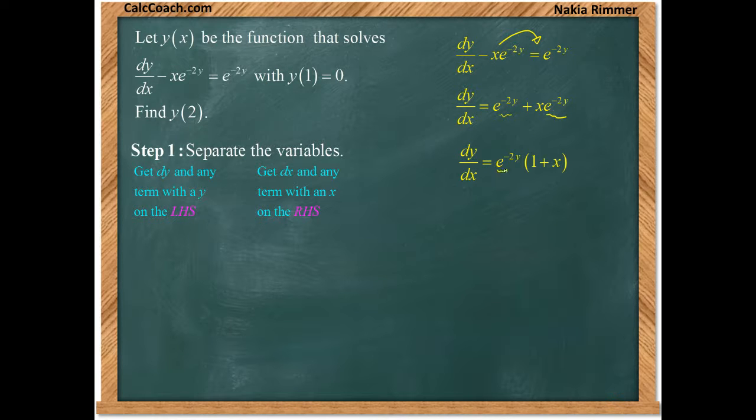And with this e to the negative 2y we could write it on the denominator as e to the 2y. So now we have things ready to be moved from one side to the other. This e to the 2y can't be on the right hand side. This dx can't be on the left hand side. So we multiply to clear those out.